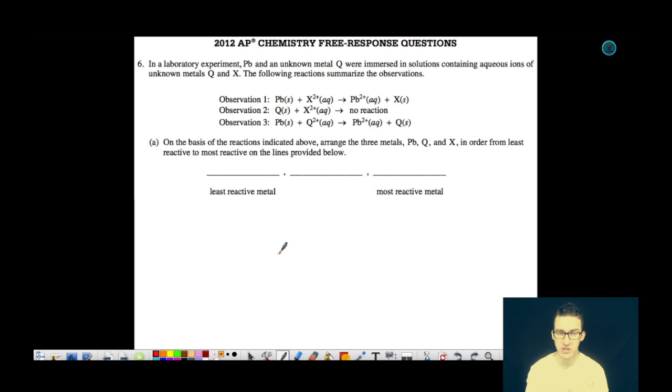Hey chemistry people, let's do some quick free response here. This particular question comes from the 2012 AP Chemistry exam. This is question number six and worth nine points. If we take a look here, in a laboratory experiment, lead and an unknown metal Q were immersed in solutions containing aqueous ions of unknown metals Q and X. The following reactions summarize the observations.